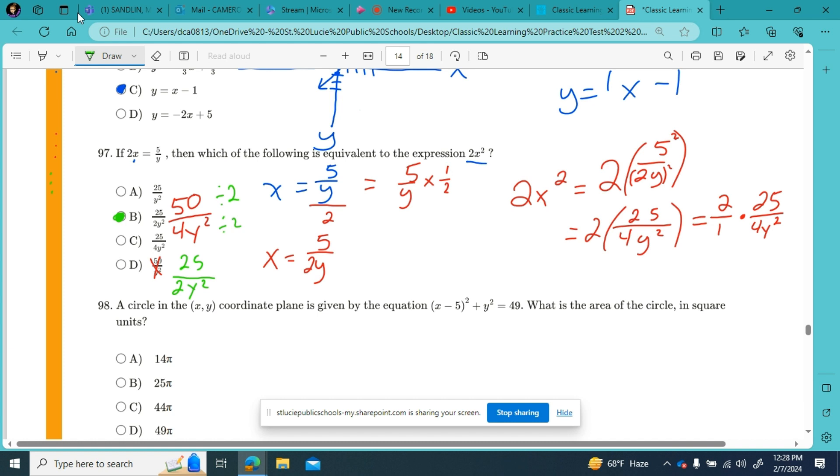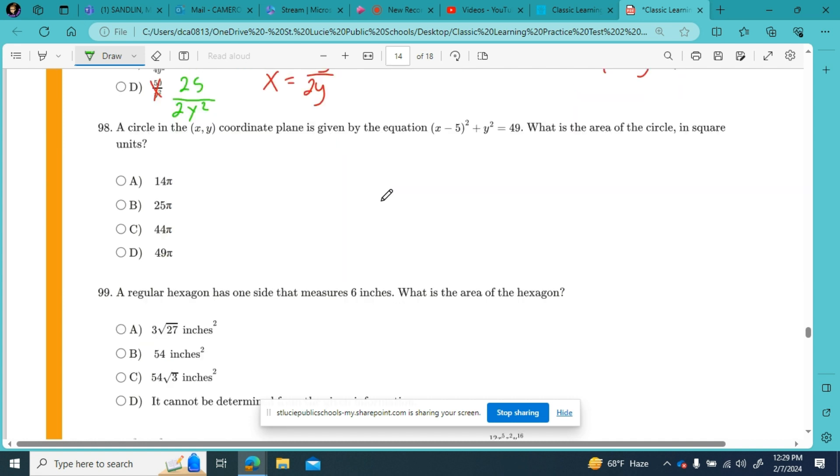So looking back, instead of taking these extra couple of steps, I should have simplified right here and canceled out this 2 and this 4. But that's okay. We found the right answer. The more of these you do, the faster you get. Same goes for the teacher, right? Okay. Number 98.